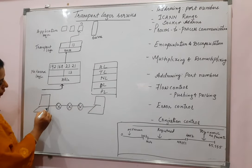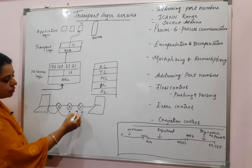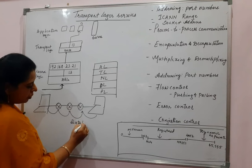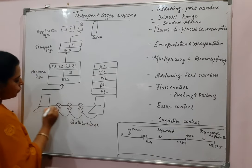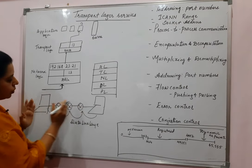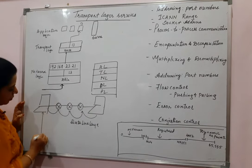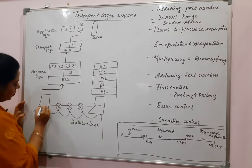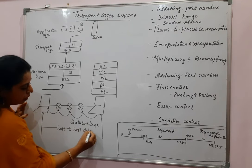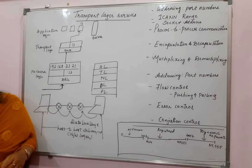From one particular source to the next node, we call it node to node. This node-to-node delivery is taken care of by the data link layer. The data link layer takes care of node-to-node delivery. Whereas if you think about the end points — one host here and the destination host — we call it host-to-host delivery. Host-to-host delivery is taken care of by the network layer.